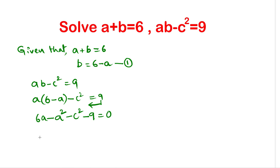Now rearrange the terms, we will get minus a squared, then plus 6a, minus 9, minus c squared equal to 0. I just rearranged the terms. Let us change the sign of all these values. So we will get a squared minus 6a plus 9, plus c squared equal to 0.